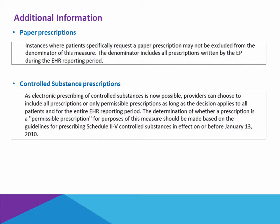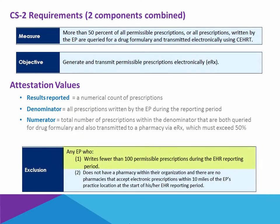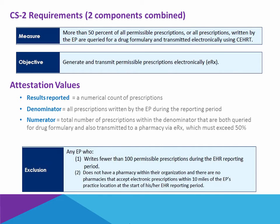Along those same lines, there is a misunderstanding on the part of many providers — such as pain management specialists or surgeons — since the majority of their drugs are controlled substances. They feel that only a few of their prescriptions are non-controlled substances, so they think they qualify for exclusion one. That is not the case, because the exclusion is worded as 100 permissible prescriptions, and controlled substances are permissible whether you choose to do them electronically or not.